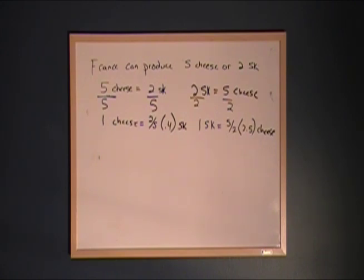Now, looking at those fractions of what one cheese equals and what one sauerkraut equals, they're related to one another. They are reciprocals of one another. That is, the numerator and the denominator are flipped. What this is telling us is that to produce one tub of sauerkraut, we have to give up 2.5 wheels of cheese. We can do the same thing with Germany.